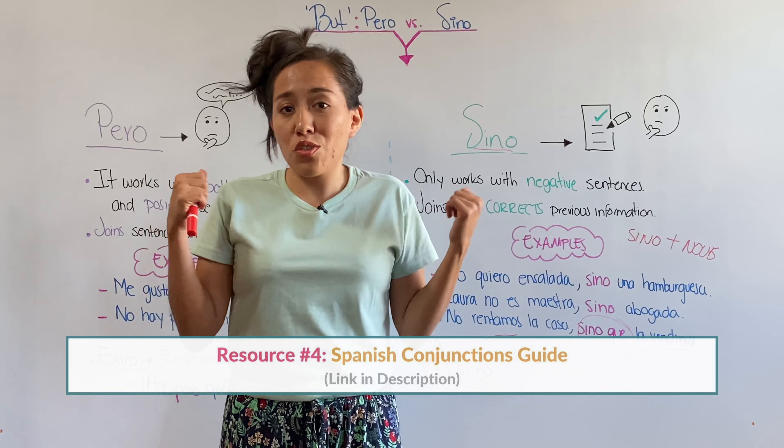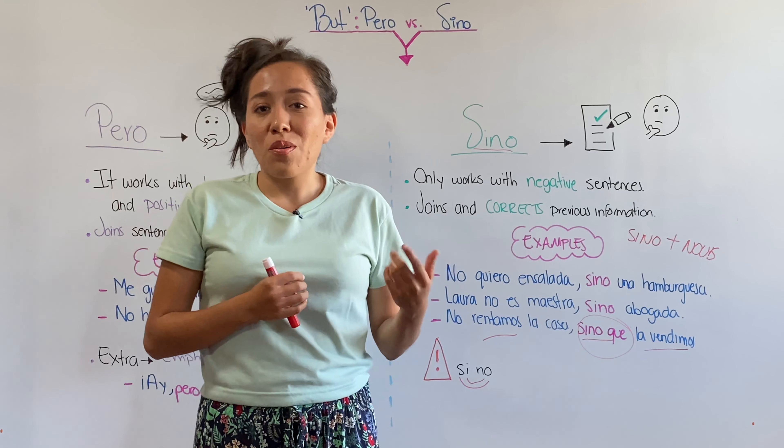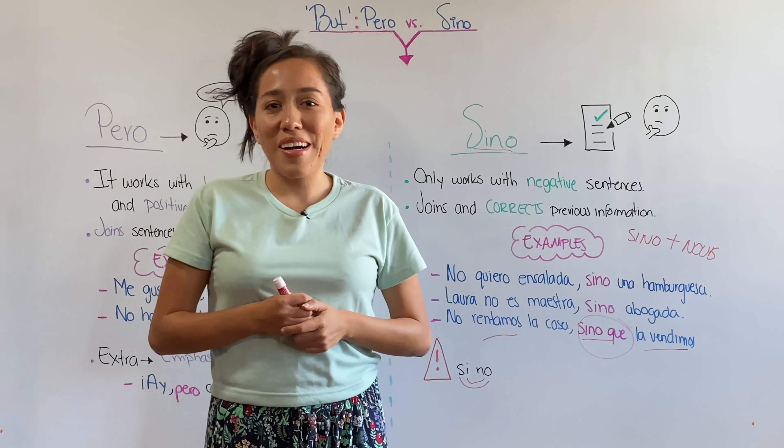That's it for today! Before I leave, I want to give you some resources in the description in case you want to go deeper into this topic. First, a video with this same lesson in Spanish to practice your listening. Second, a guide on the difference between 'pero' and 'sino' with more examples, different structures, and a quiz. Third, a direct link to the quiz to test your knowledge. Fourth, a guide to conjunctions in Spanish — these words are super important to help you join sentences and sound more natural. If you liked the video, please hit the like button. Bye!